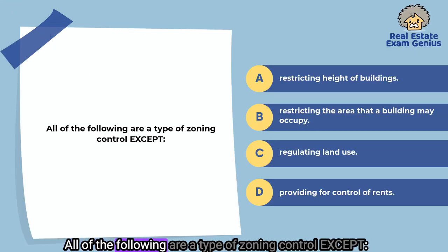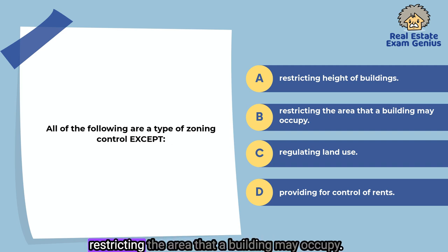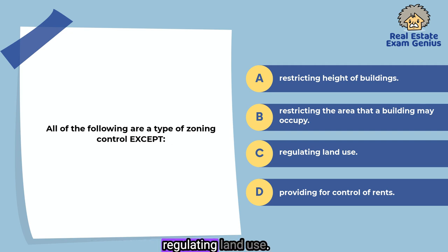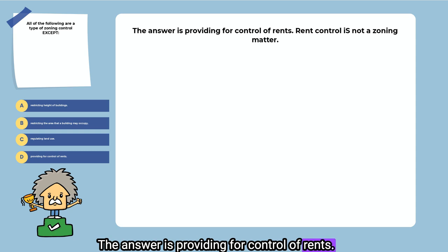All of the following are a type of zoning control except: restricting height of buildings, restricting the area that a building may occupy, regulating land use, or providing for control of rents. The answer is providing for control of rents. Rent control is not a zoning matter.